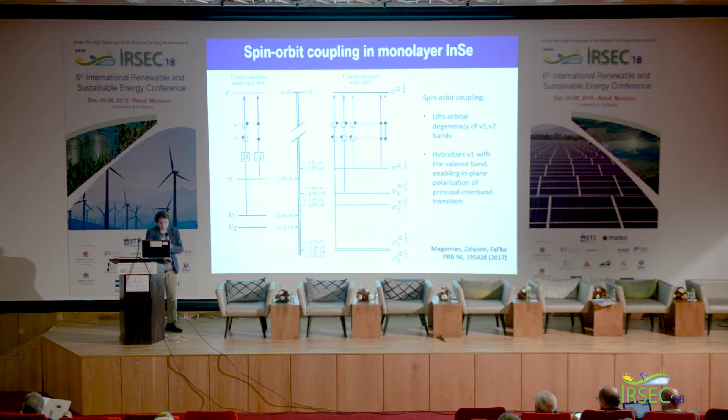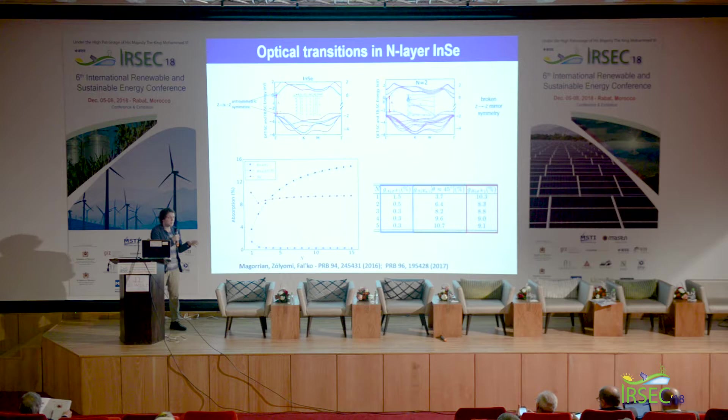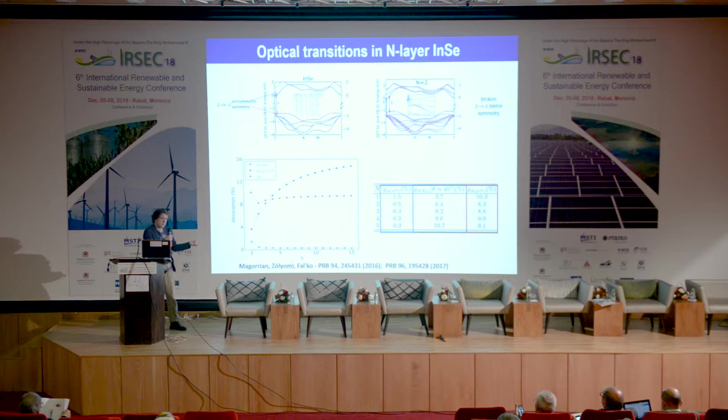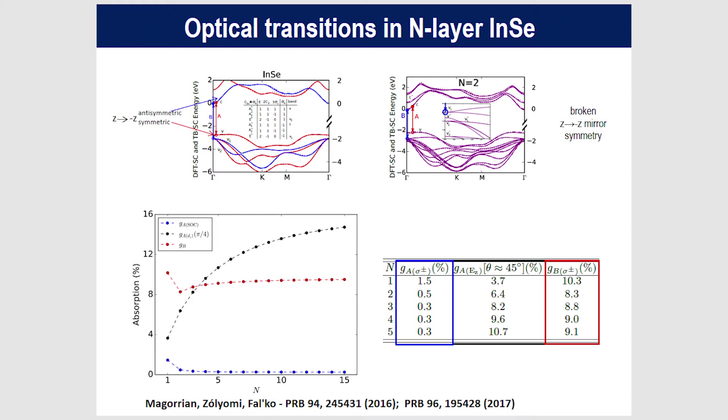Looking at absorption from tight binding: the blue line shows coupling of the principal interband transition to in-plane polarized light — this would be zero without spin-orbit coupling, and it is still quite small, getting very small as you approach the bulk. So historical literature on the bulk crystal correctly states the transition is active only for out-of-plane polarization, but as you go to smaller numbers of layers you do get this finite in-plane component.